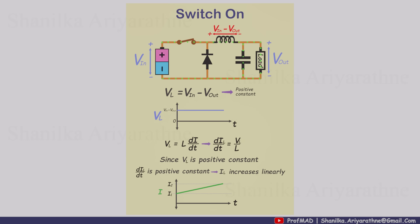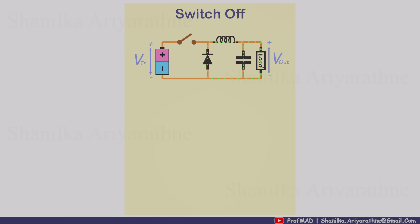Now, let's look at the switch off case. When the switch is open, the current path runs through the diode. If we ignore the small voltage drop across the diode, the voltage across the inductor becomes minus V out. This is a constant negative voltage.